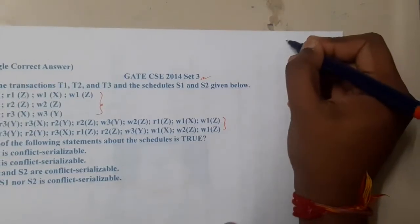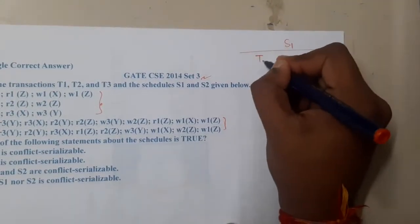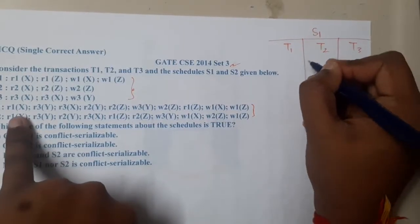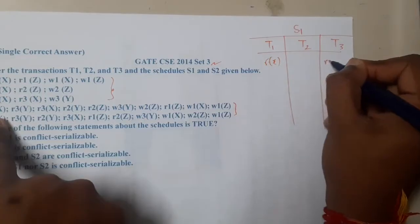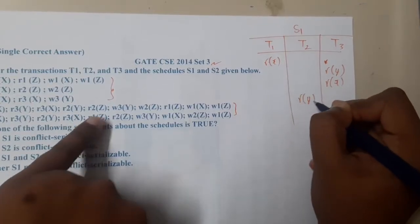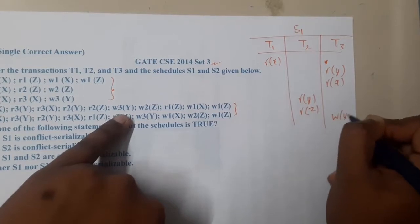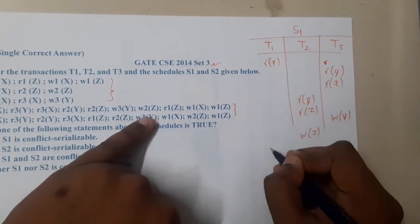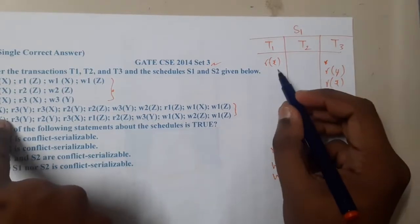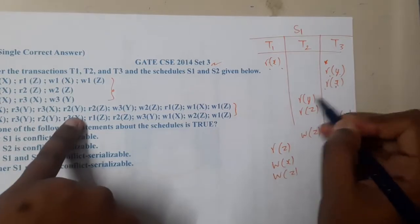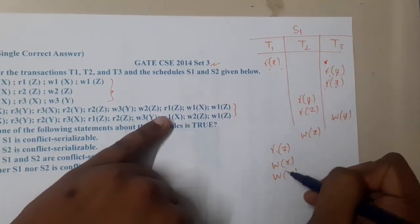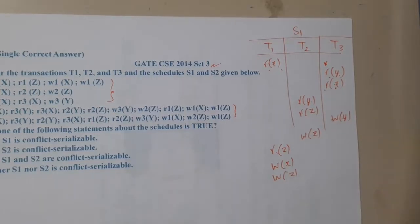Let me start from the top. For schedule S1, we have T1, T2, and T3. We are having: Read(X), Read(Y), Read(X), Read(Y), Write(Y), Write(Z), Read(Z), Write(X), Write(Z). The subscripts indicate which transaction number each operation belongs to.